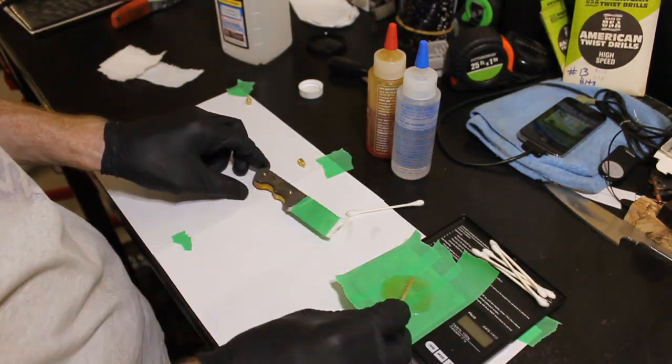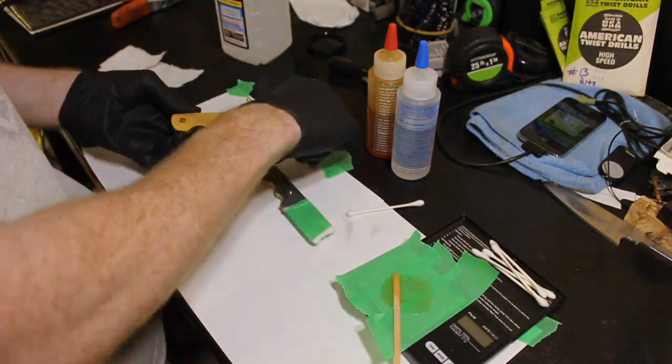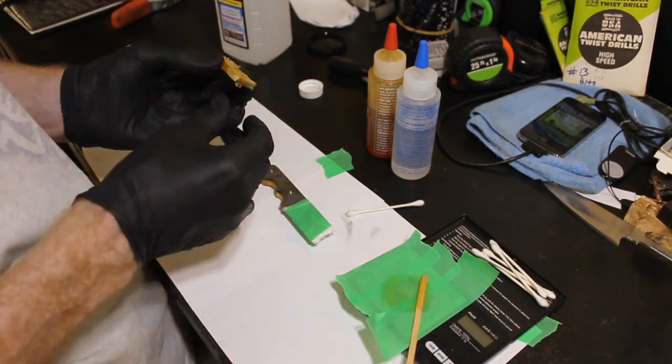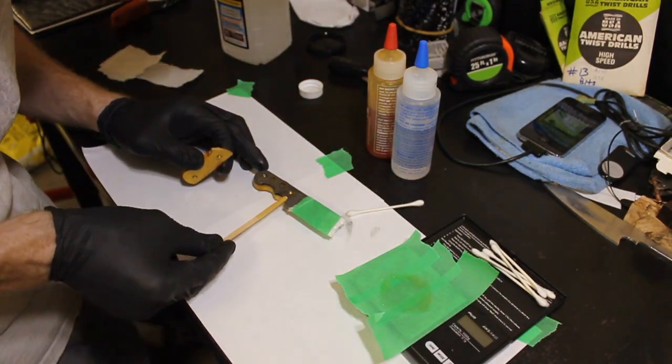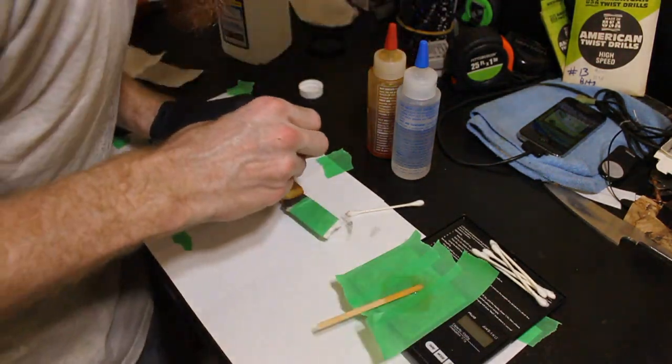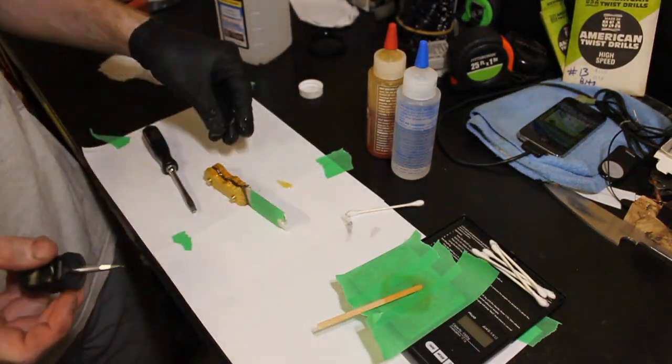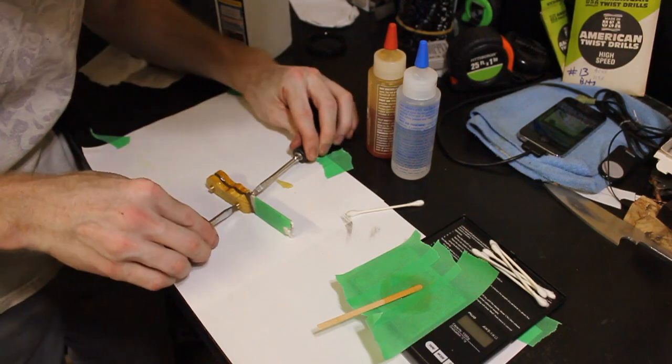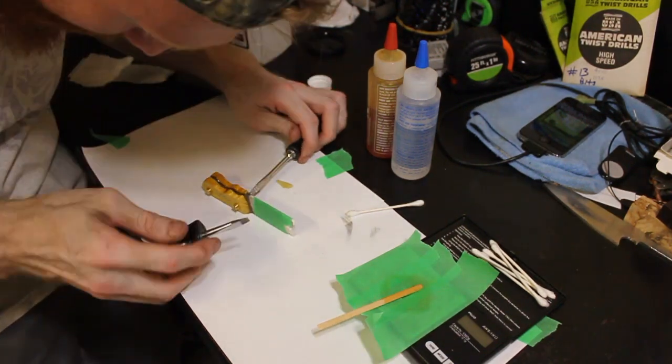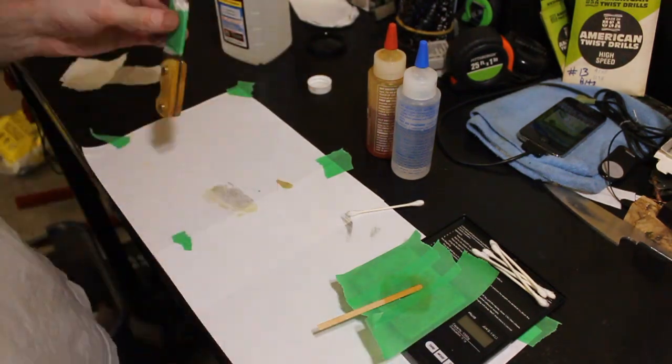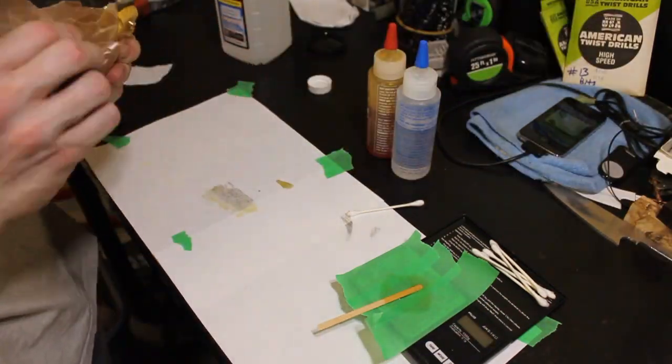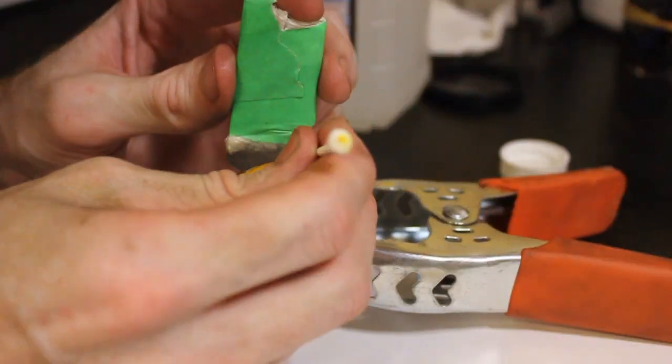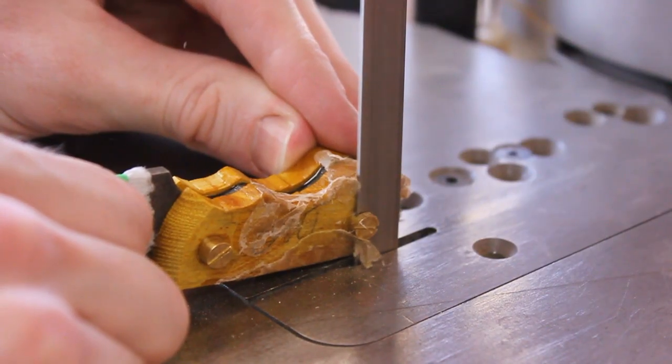We pour out some G-Flex epoxy from West Systems and coat all the mating surfaces. After we get the scales together, I lightly tighten them up with two screwdrivers. You don't want to get out of hand because you don't want to squeeze all the glue out, but you want them to be snug. Then wrap it up with wax paper so it won't drip all over the table, and clean up the front of the handle scales while the glue is still wet.